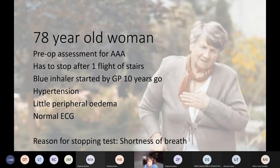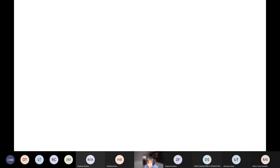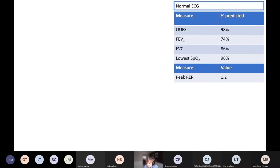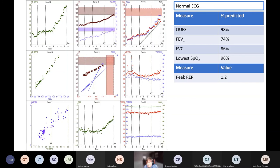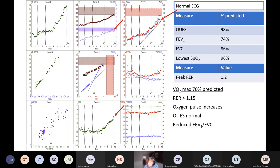All right, another one. 78 year old woman, pre-op assessment for abdominal aortic aneurysm. And she says, I have to stop after climbing a flight of stairs. She's got hypertension, but she's also on a blue inhaler and she's got a bit of peripheral oedema. So this is her test. I'll tell you, she's got a normal ECG and these are her numbers. And this is her nine panel plot. So again, we'll start off looking at the VO2 max. So 70% of what it should be. So she's got a sort of mild limitation of exercise capacity. The RER again, it is above 1.15. So we're comfortable with saying that's a genuine limitation. The oxygen pulse increases through exercise. But more importantly, her OUES is normal. It's 98% of what it should be. But her FEV1 to FVC ratio, if you look at the spirometry above, both are low and the FEV1 is particularly low. And she has no breathing reserve in the bottom left plot. Okay, so there's no gap between her tidal volume and her maximum estimated ventilation. So this is a mild to moderate respiratory limitation that this lady has.